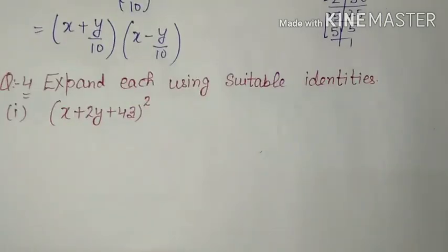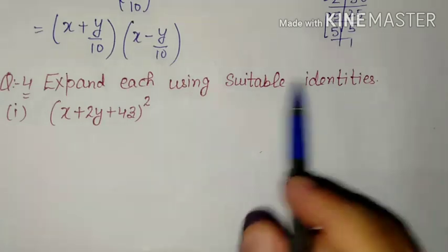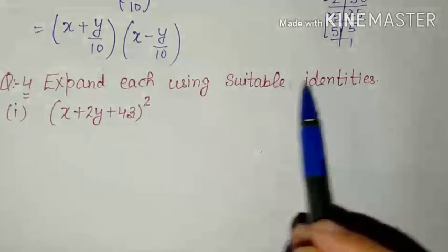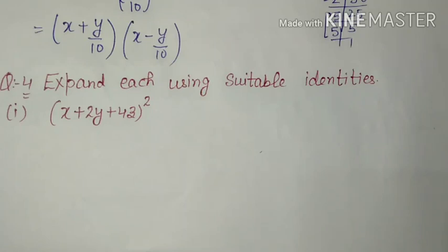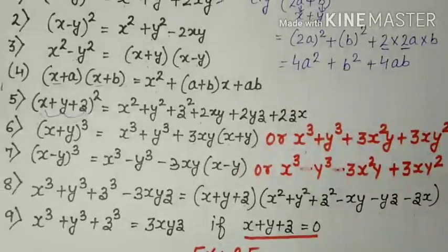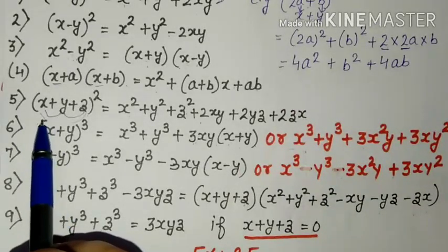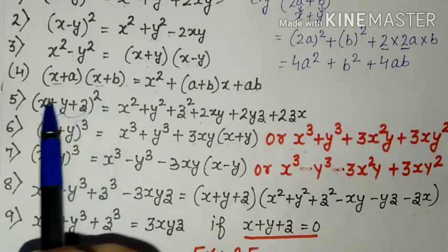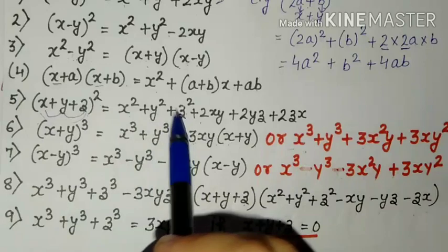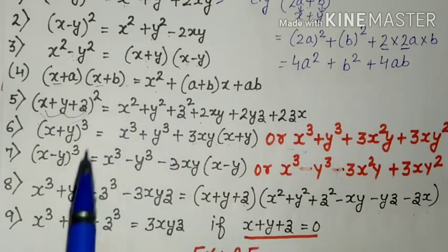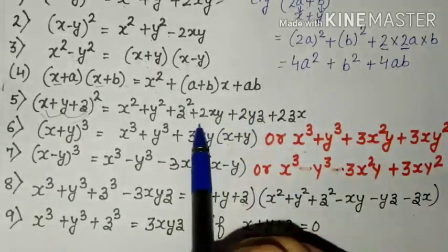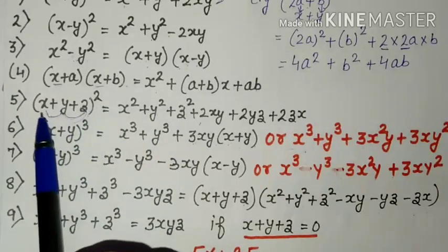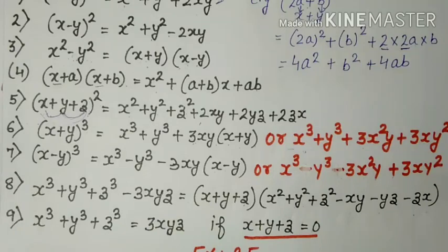Next question number 4 mein bhi humne kya karna hai? Identities ka use karke isko solve karna. Expand karna hai using suitable identities. Means isme bhi humne same check karna hai kaun si identity use hogi. So identities mein ab hamare paas 3 terms ka square hai. 3 terms square — yahan kaun si identity thi? 5th identity: x plus y plus z whole square. Agar 3 terms ka square hai, pehle to 3 terms ka square. 1st term ka square plus 2nd term ka square plus 3rd term ka square. Then 2 ke saath: jab hum square karte hain to saath mein 2xy wali term aayegi. Ab yahan 3 terms hain — ek baar 2 ke saath xy, phir yz, and then zx. To yeh identity ka use karke hum isko solve karenge.